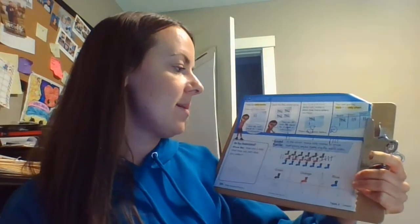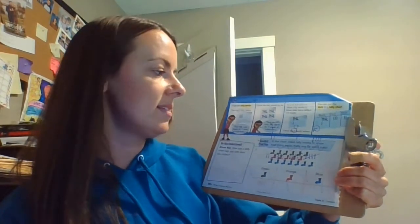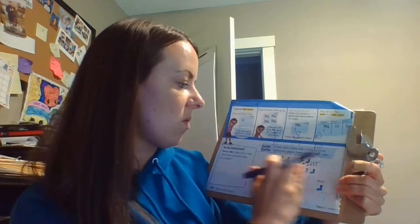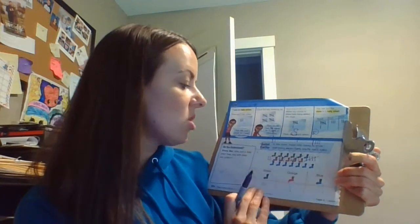Alright, so it says in the chart, make tally marks to show how many socks there are for each color. So we have green, orange, and blue. So they've done green for us, but we're going to check their work just to make sure we know how to do it.